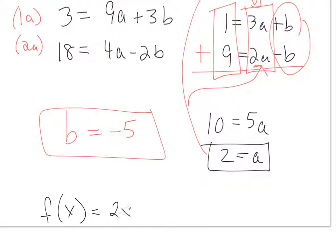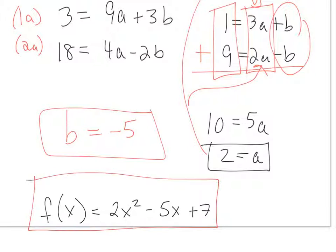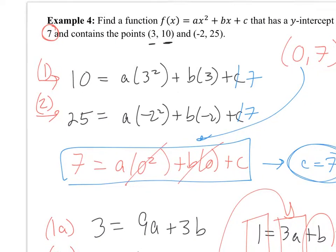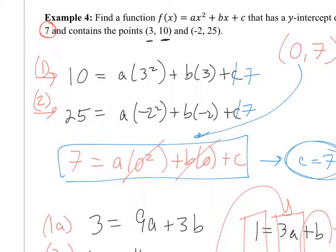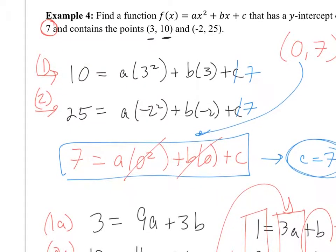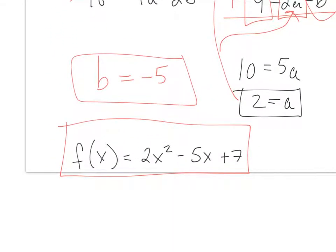The final answer is f(x) equals 2x squared minus 5x plus 7. That's because A was 2, B is negative 5, and C was given as 7 from the y-intercept. To verify, type this function into Y1, go to the table, and check that when x equals 3 you get 10, and when x equals negative 2 you get 25.